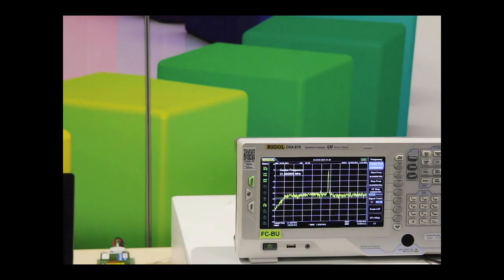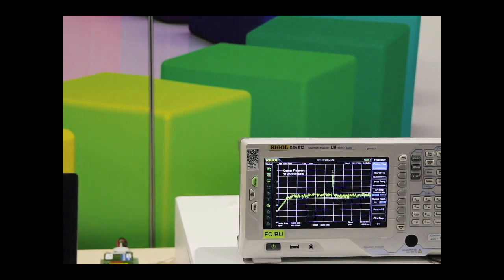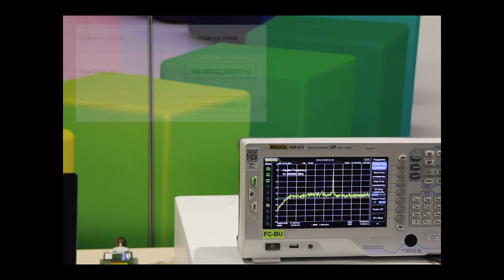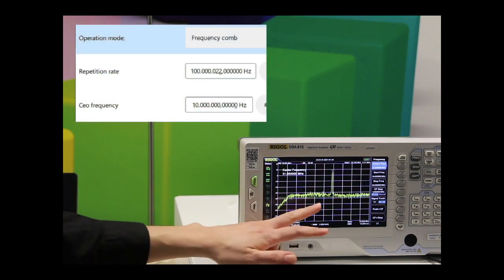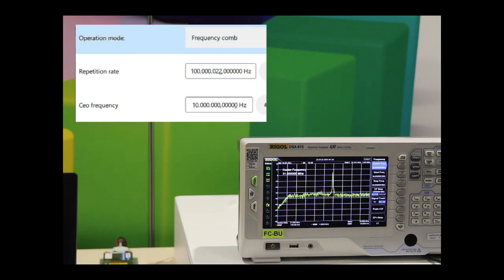To figure out what is the sign of this beat signal, because it can be negative or positive, what I will do is change the repetition rate and then you will see how this will move.